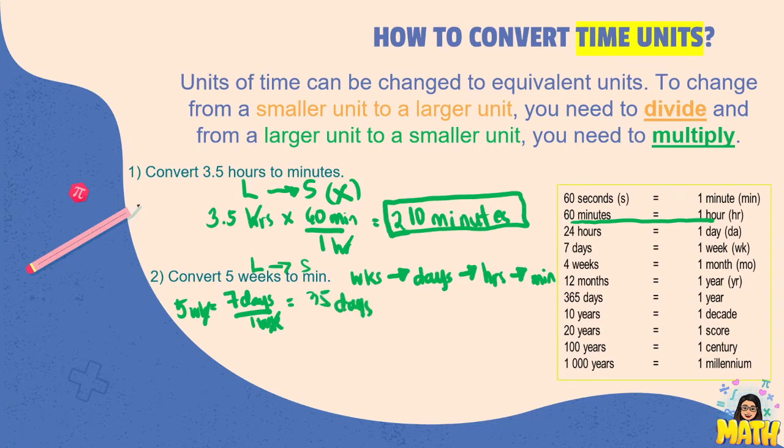Next, days to hours. We have 24 hours in one day, so 35 times 24, 840 hours. And then we have hours to minutes, that's 60 minutes in an hour, so 840 times 60, 50,400 minutes.